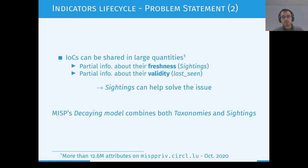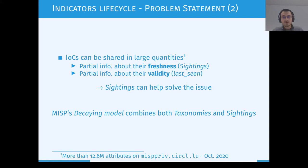The second problem is that IOCs can be shared in large quantities, and due to that we only have partial information about the freshness and partial information about the validity of this data. To tackle this issue, we use something called sightings in MISP. The main idea of this presentation about the decay model we are going to present is that it combines both taxonomies and sightings to provide indicator lifecycle management.